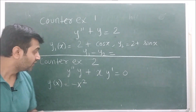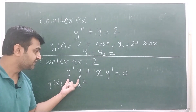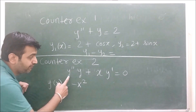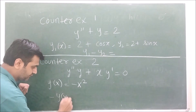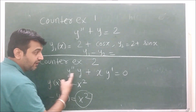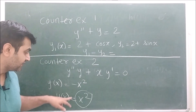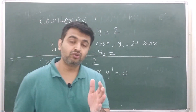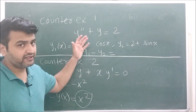Counter-example 2: take a homogeneous but non-linear second order differential equation (with a product of the dependent variable and its derivative). One can verify that y(x) is a solution by computing y' and y'' and plugging in. However, if you take a scalar multiple — for example −y(x), which gives x² — and substitute it, it does not satisfy the equation. So even a scalar multiple of a solution is not necessarily a solution for a nonlinear equation. Linear combination of solutions is a solution only when the equation is both linear and homogeneous.